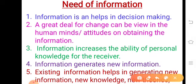The second point is that a great deal of change can be viewed in the human mind's attitude on obtaining information. Basically, if we have some information related to any content, it can create a positive attitude in human minds. That's why human attitude also changes with that prior information, and with the help of that information humans can perform various functional decisions for their business organization. So information makes a positive attitude in human minds.